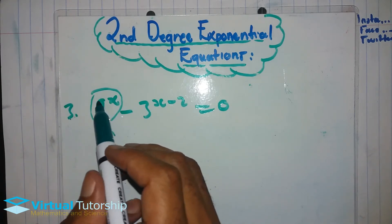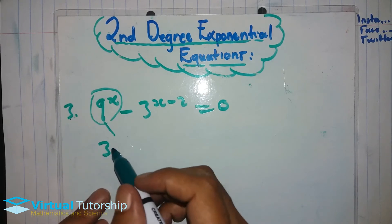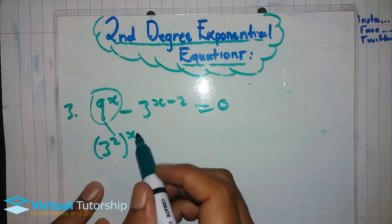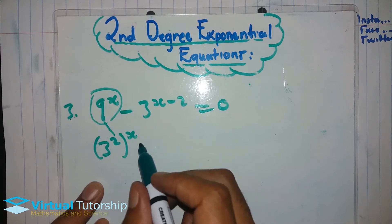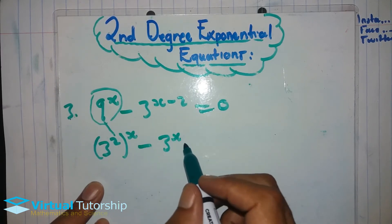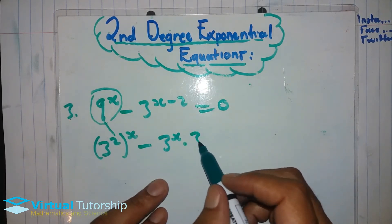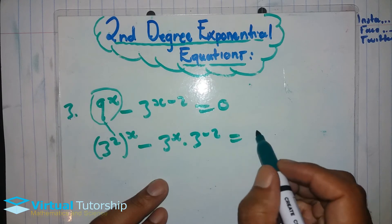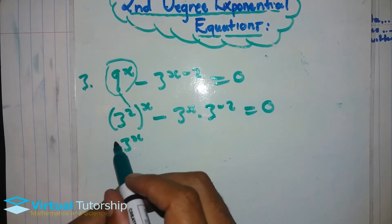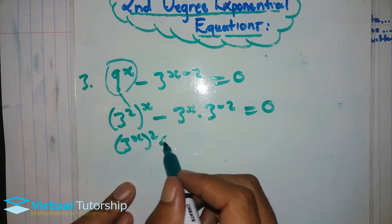Which is: 9 exponent x minus 3 exponent (x minus 2), is equal to zero. Now, this power has a base which is a non-prime number.